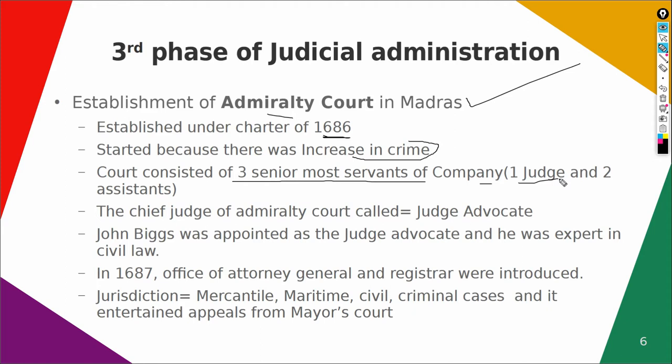The Admiralty Court consisted of three senior-most servants of the company — one of them was the Judge of the Admiralty Court and two others acted as assistants. The chief judge was called the Judge Advocate. Sir John Biggs was appointed as the first Judge Advocate and he was an expert in civil law. In 1687, two new offices were also introduced: the office of Attorney General and the office of Registrar.